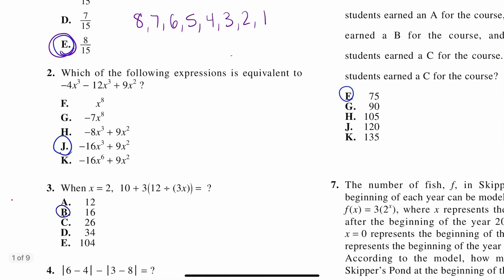Let's look at number two. Which of the following expressions is equivalent to -4x³ - 12x³ + 9x²? So, this is just an example of combining like terms. Like terms have the same exponent. So, the only ones that have the same exponent are -4x³ and -12x³. So, just do what it says. -4 minus 12 is -16. And when you're adding or subtracting, you never change exponents. So, it's going to stay cubed. And then just bring down that 9x². So, then we get answer J.